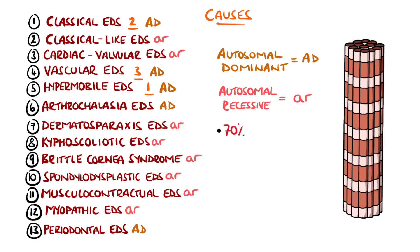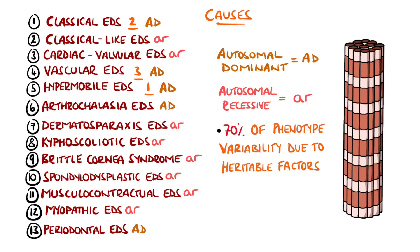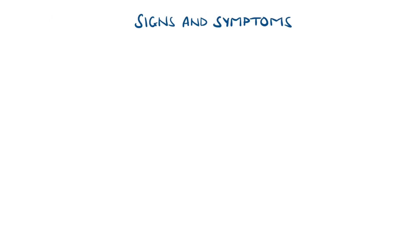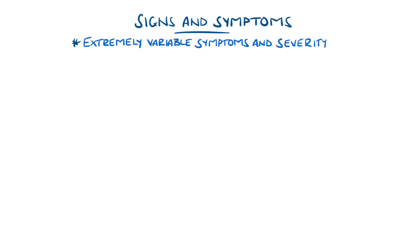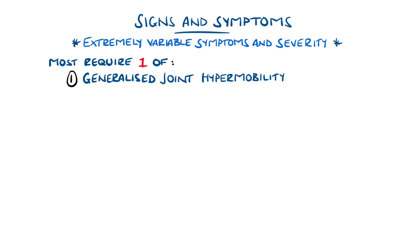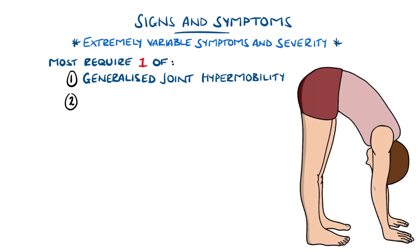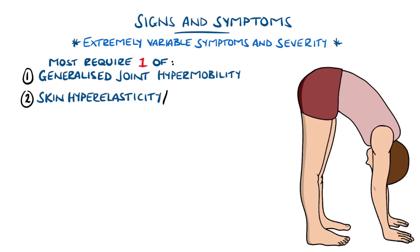Additionally, 70% of the variation in the phenotype is thought to be due to heritability. The presentation of Ehlers-Danlos syndromes is extremely variable, both in severity and in the character of symptoms. In general, for a diagnosis to be made, most subtypes will need either the presence of generalized joint hypermobility, skin hyperelasticity — meaning excessively stretchy skin — or atrophic scarring.